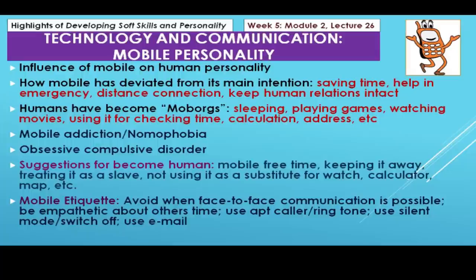What was the main intention of inventing mobile? It was saving time — instead of keeping the phone in a fixed place, mobility is given so you can be anywhere and save time. It was used for help in emergencies, for instantaneous long-distance connection, and to keep human relations intact. But humans have become 'mobarks' — mobile organisms — sleeping, playing games, watching movies, using mobile for checking time, calculation, addresses and so on.